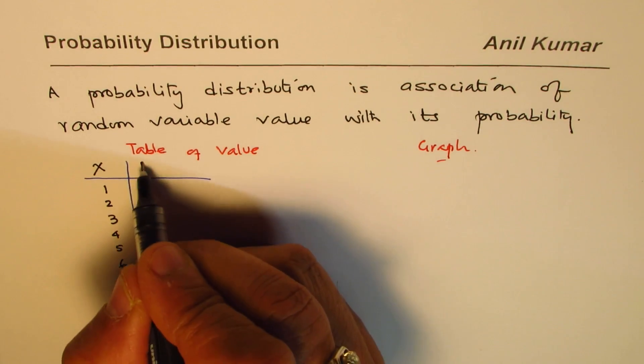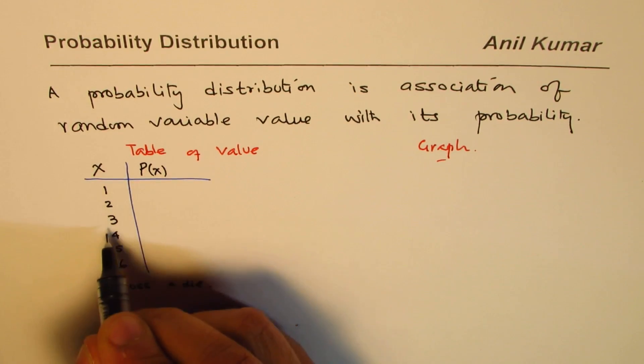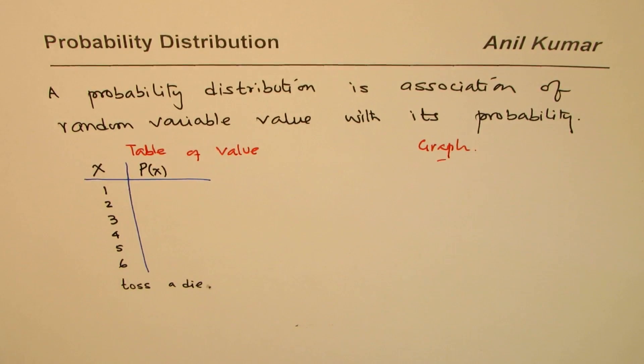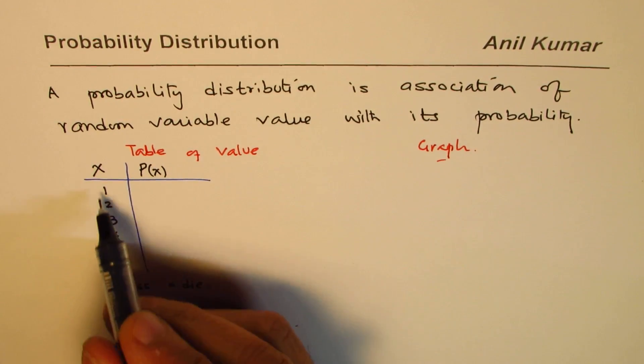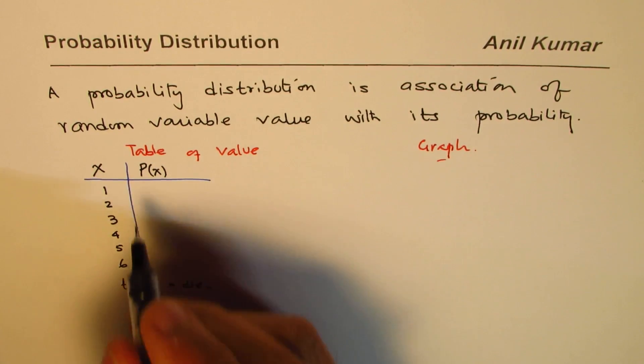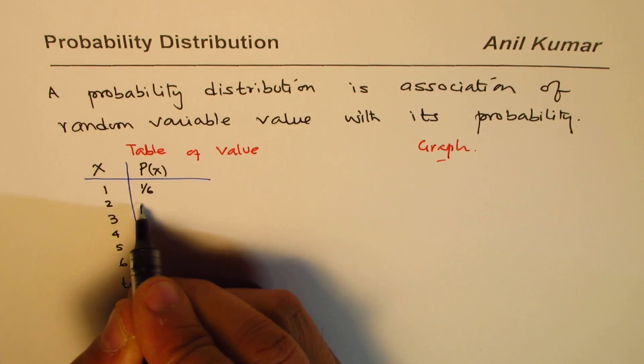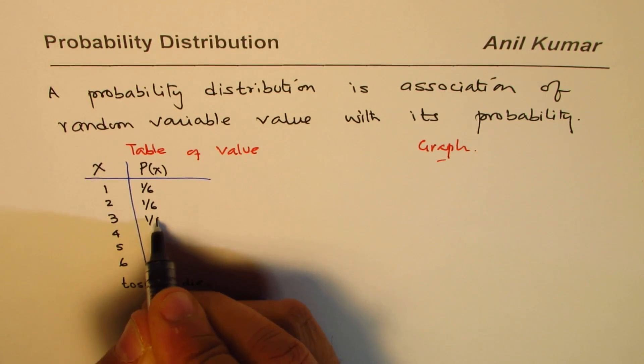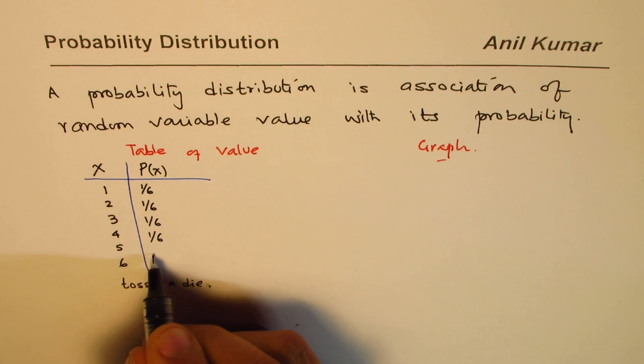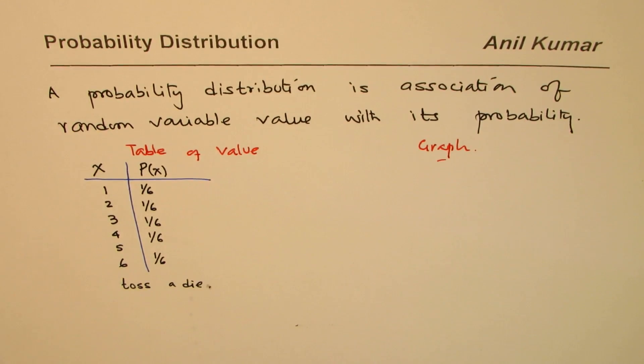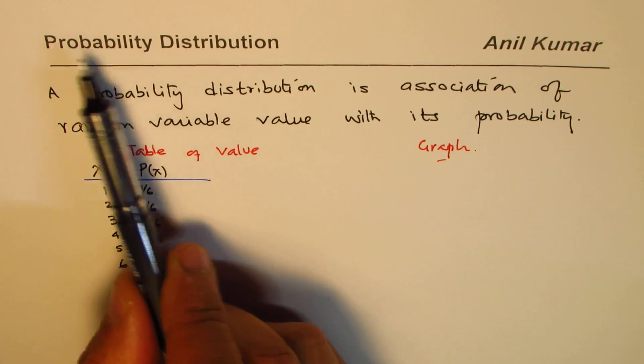Probability of small x's, these are individual values which x can take. Now since it is a fair die, probability will be 1 sixth for each. 1 over 6.